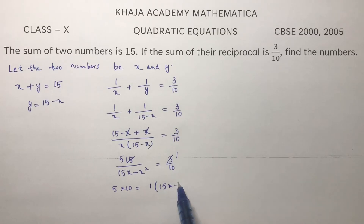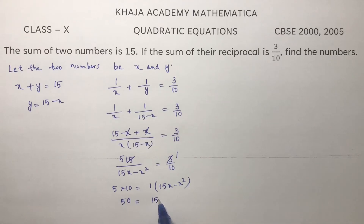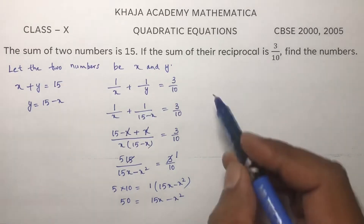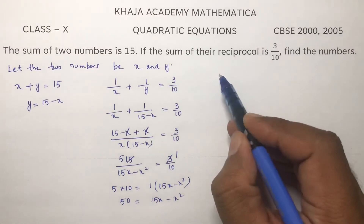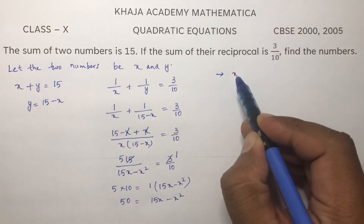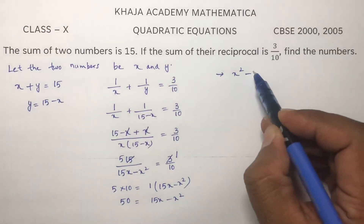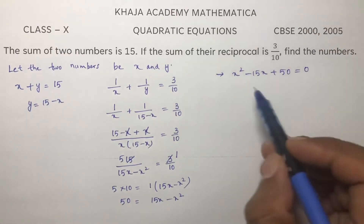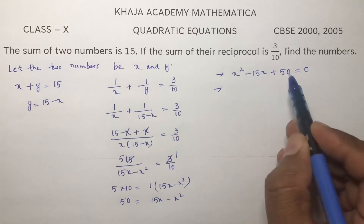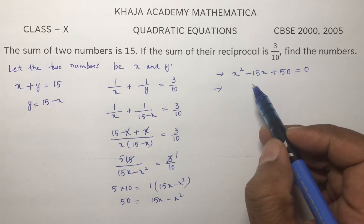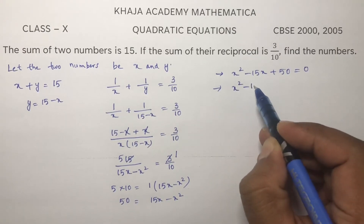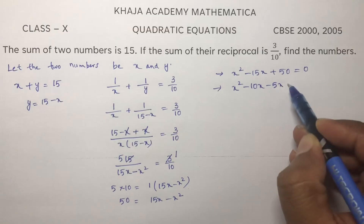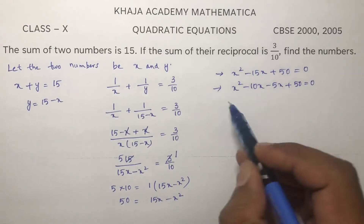Here 1 into 15x minus x squared. So 50 equals 15x minus x squared. If we write in standard form with x squared first and positive, bring these two terms to the LHS: x squared minus 15x plus 50 equals 0. If we factorize 50 by splitting the middle term — you need 15, so 10 into 5 — we get x squared minus 10x minus 5x plus 50 equals 0.